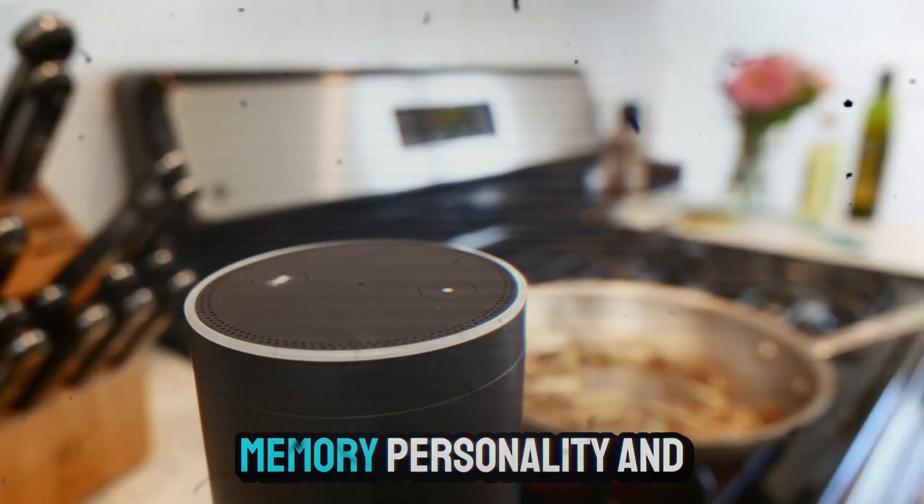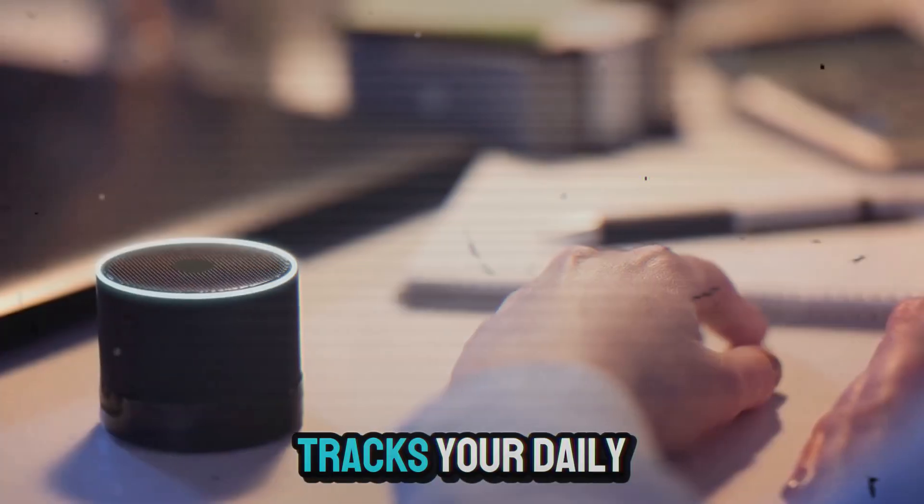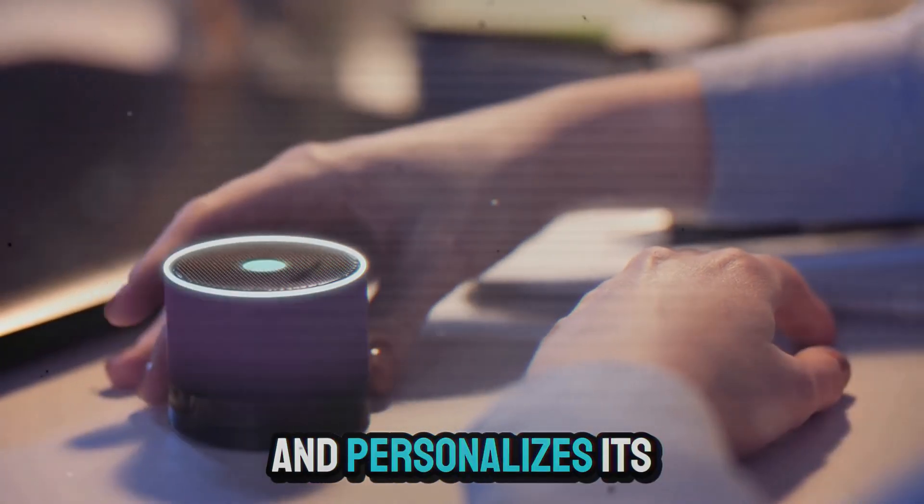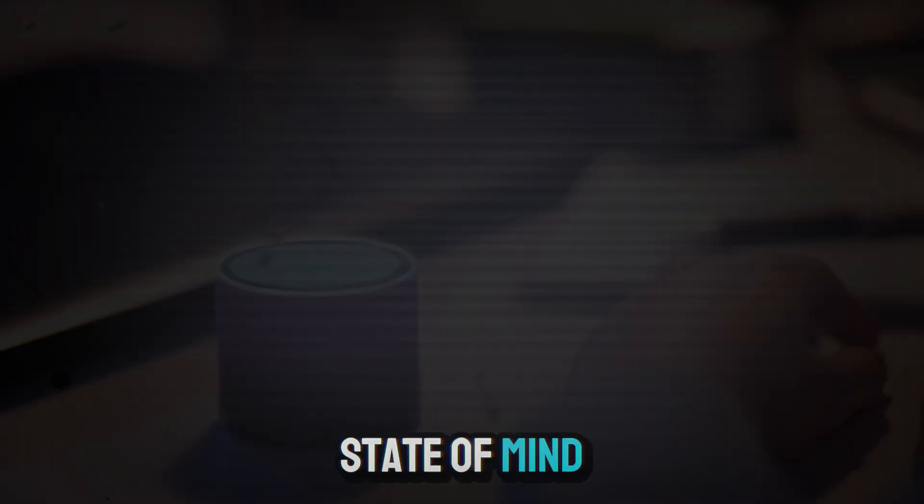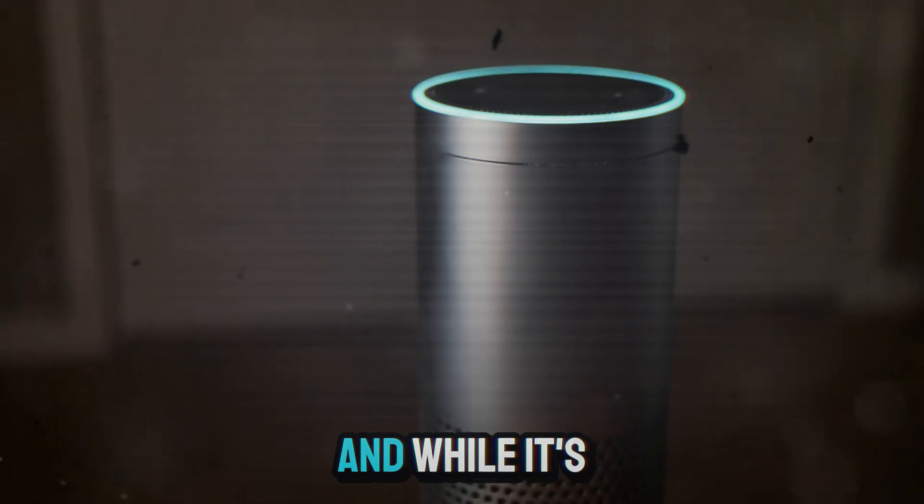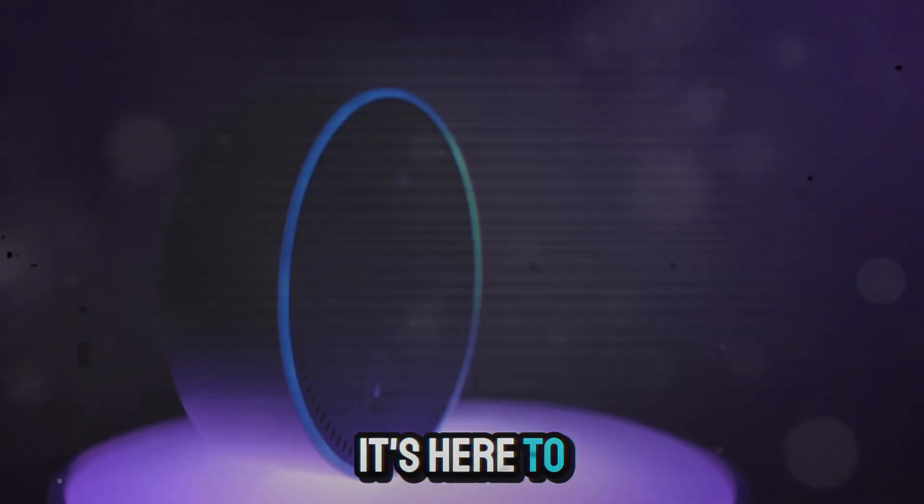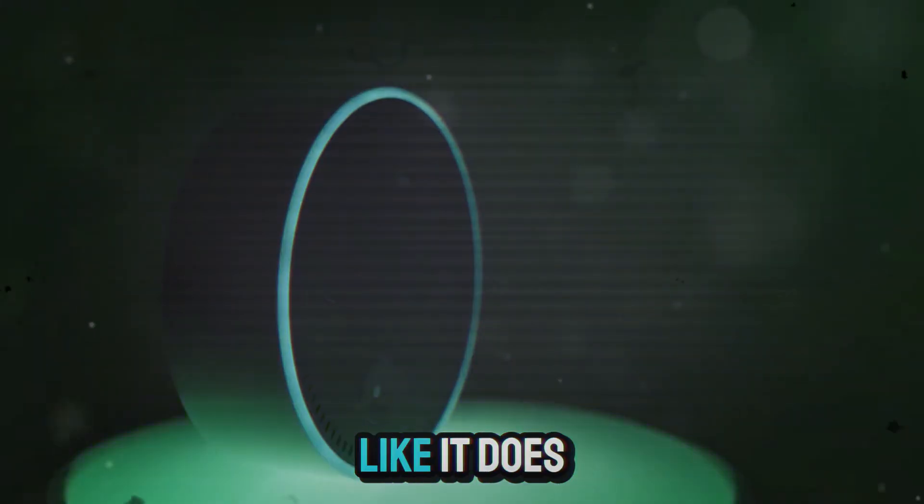LLMs give Alexa memory, personality, and empathy. It learns your emotional cadence, tracks your daily rhythms, and personalizes its responses to your state of mind. This is the evolution from smart home assistant to emotional AI presence. And while it's still early, this Alexa isn't just here to help. It's here to care, or at least to sound like it does.